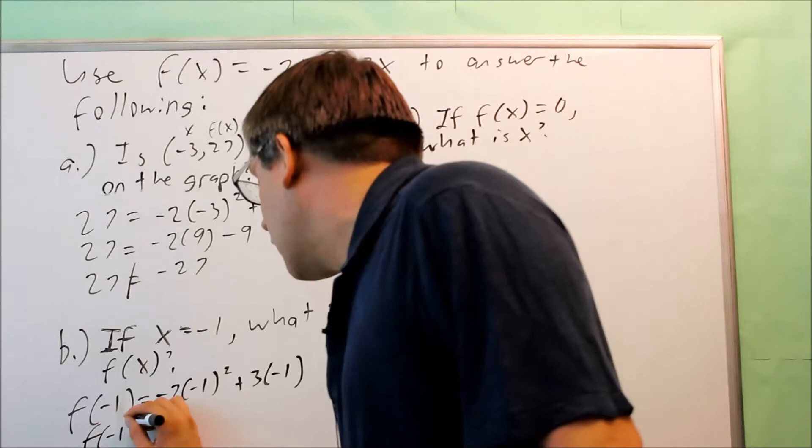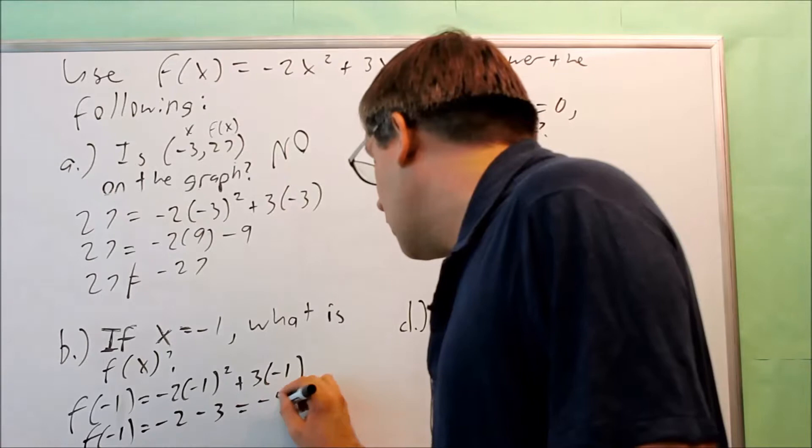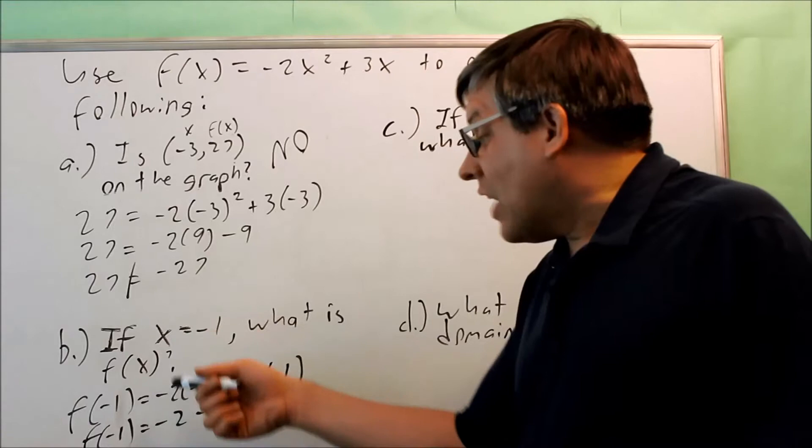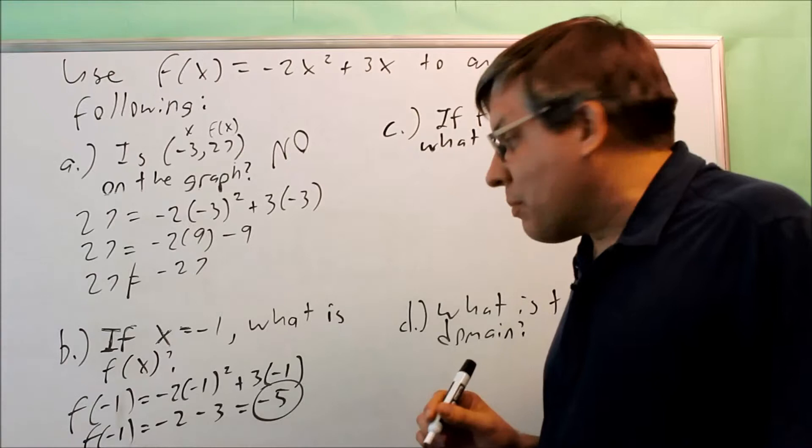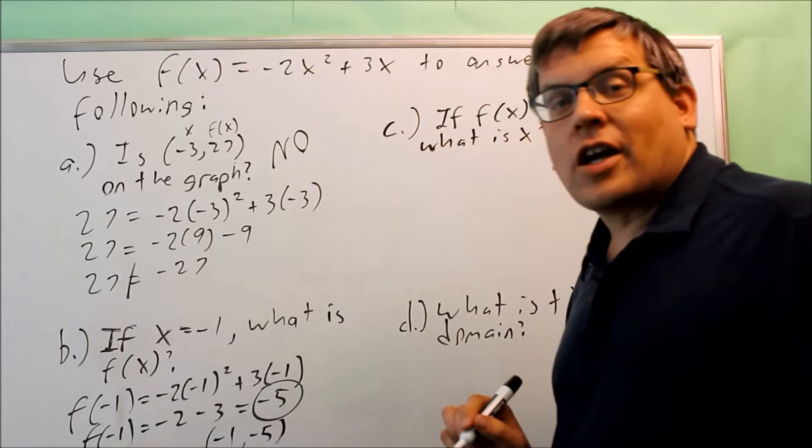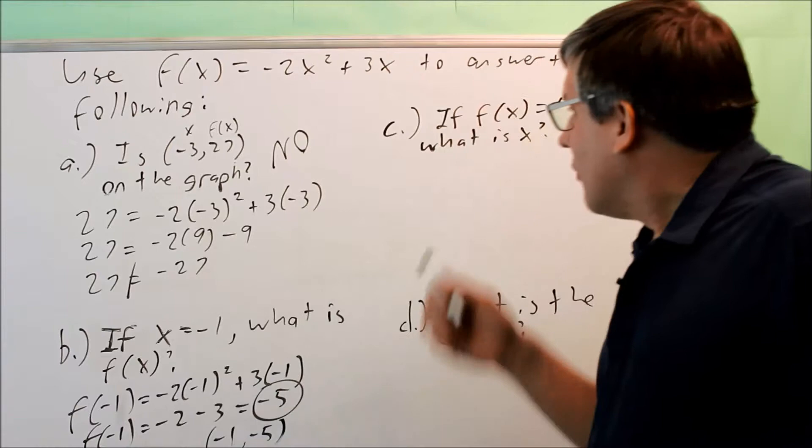I want to simplify that. I get f(-1) is equal to -2 - 3, which is going to give you -5. So if x is equal to -1, the y value, or f(-1), that equals -5. If they wanted you to write this as a point, you could. That would be written this way. -1 and -5 would be the actual point that's on the line itself. So (-1, -5).